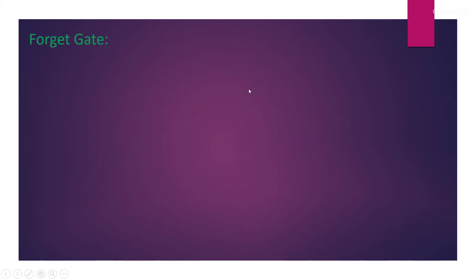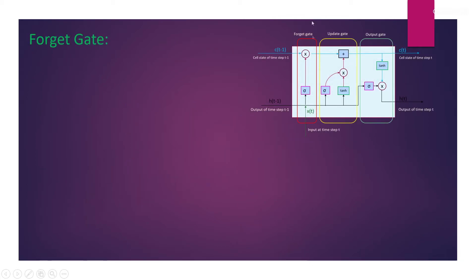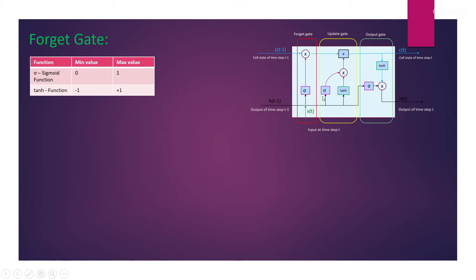Let's understand the gated mechanism — forget gate, update gate, and output gate. As you can see, we have a sigmoid activation function and a tanh activation function. The sigmoid function gives a minimum value of 0 and a maximum value of 1. The minimum value for the tanh function is negative 1 and the maximum value is positive 1.